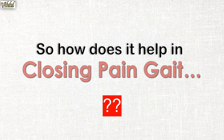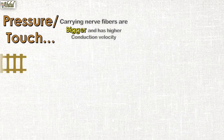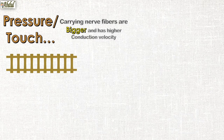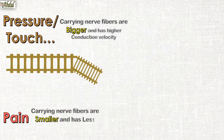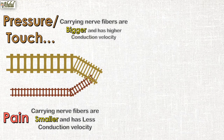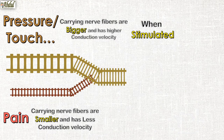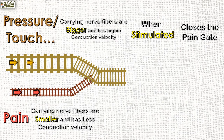So how does this help in closing the pain gate? Pressure and touch carrying nerve fibers are bigger and have higher conduction velocity — I'm representing these as a bigger and broader railway track for your understanding. Pain carrying nerve fibers are smaller in diameter and have less conduction velocity. So when the pressure and touch carrying nerve fibers get stimulated, they close the pain gate.